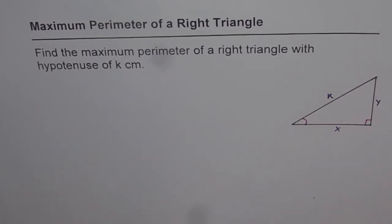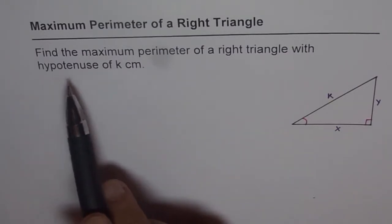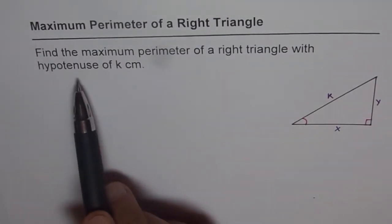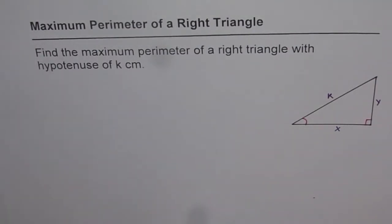Maximum perimeter of a right triangle. This is a common question and every time it is asked with different dimensions. So what I have done here is taken a very general case. The question is: find the maximum perimeter of a right triangle with hypotenuse of k centimeters, where k could be any real number.